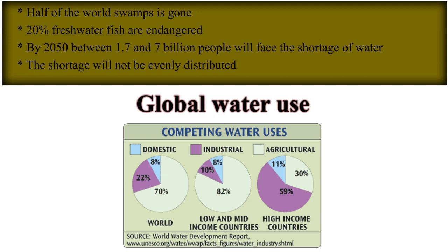Looking at global water use, the industries requiring the most water are petroleum refining, food processing, metals, chemical processing, and pulp and paper. The industrial use of water creates toxic and hazardous pollutants that render waste water unfit for subsequent human consumption or use in the agricultural sector.